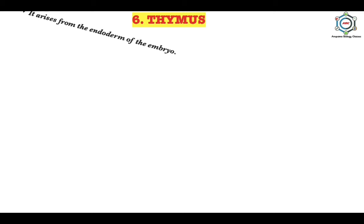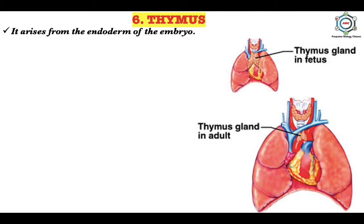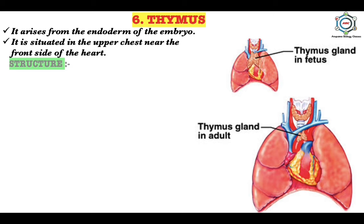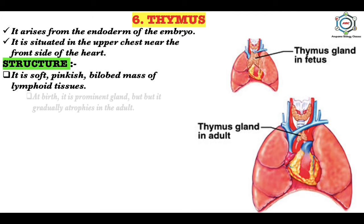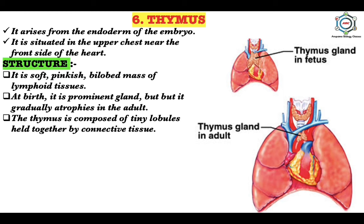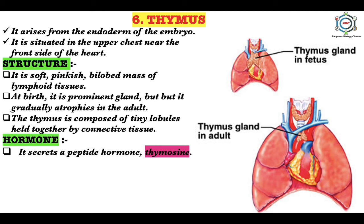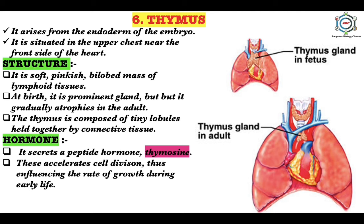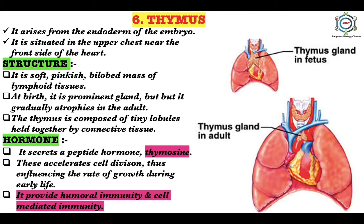The sixth endocrine gland is the thymus. It arises from the endoderm of the embryo and is situated in the upper chest near the front side of the heart. It is a soft, pinkish, bilobed mass of lymphoid tissue; at birth it is a prominent gland but gradually atrophies in the adult. The thymus is composed of tiny lobules held together by connective tissue. It secretes a peptide hormone called thymosine, which accelerates cell division, influences the rate of growth during early life, and provides humoral and cell-mediated immunity.